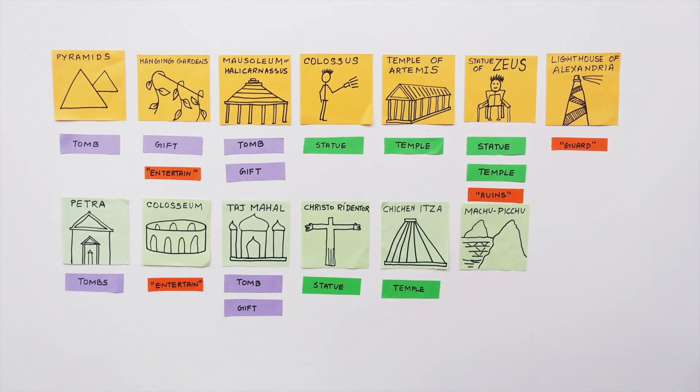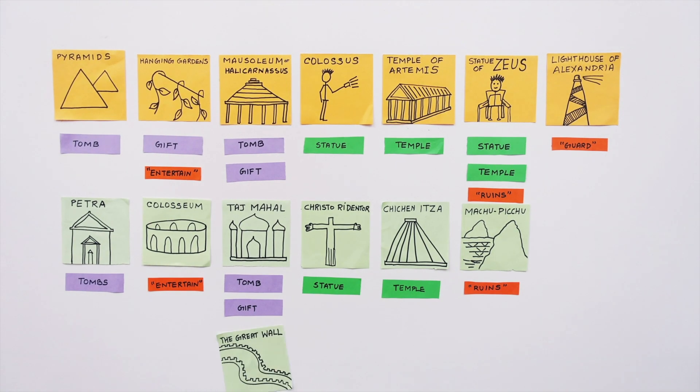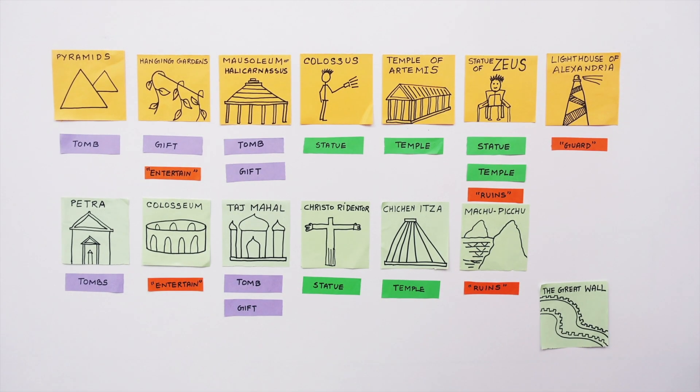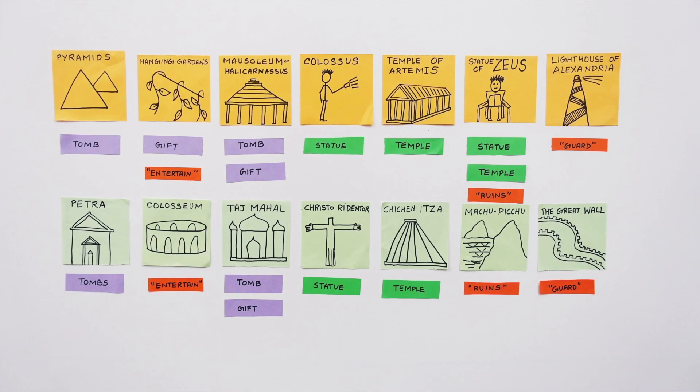Machu Picchu in Peru is a city of ruins from the Incan civilization. Finally, the Great Wall of China was built by the Ming Dynasty to guard their empire from the invading Mongols.